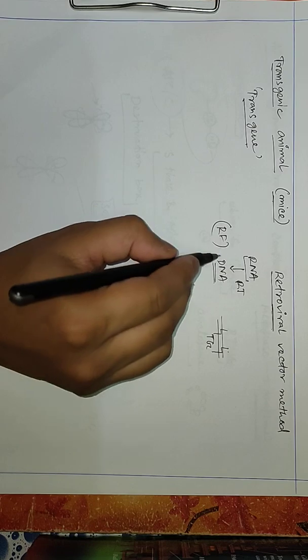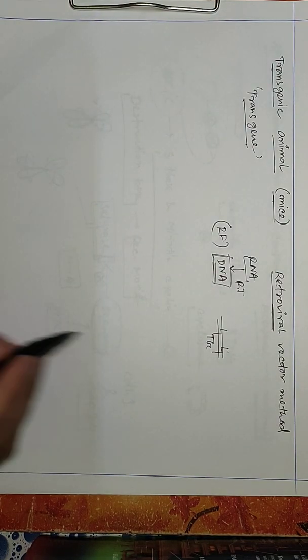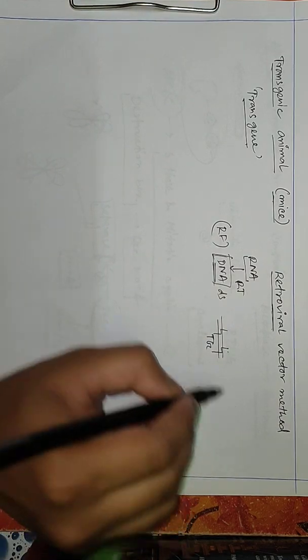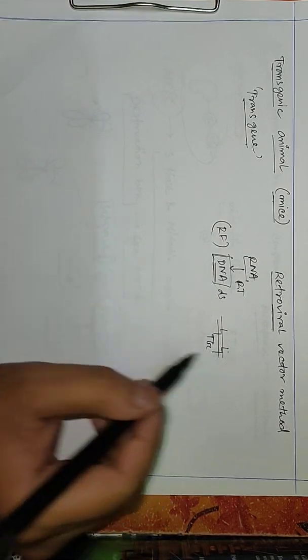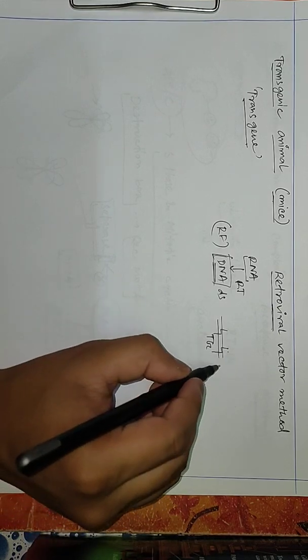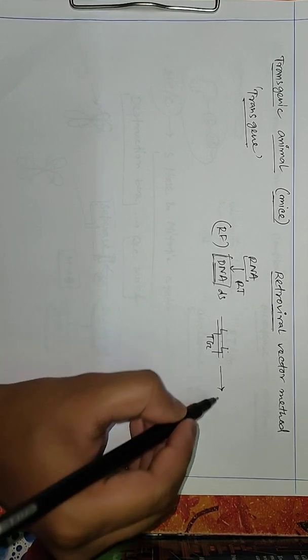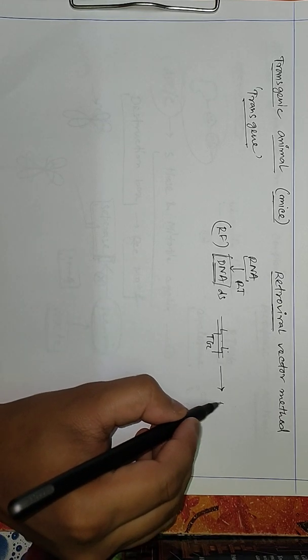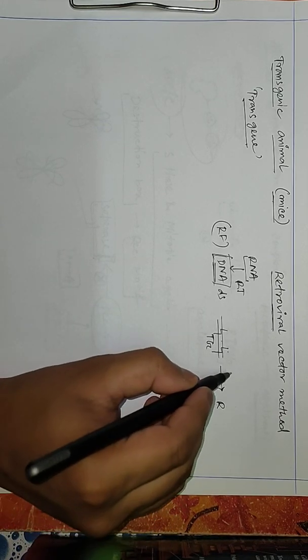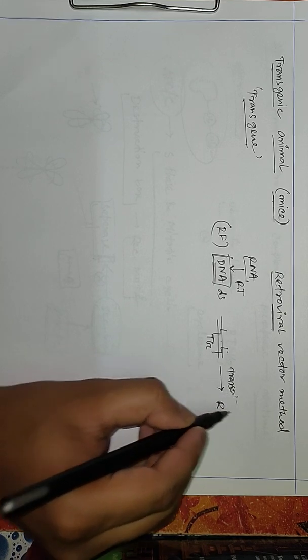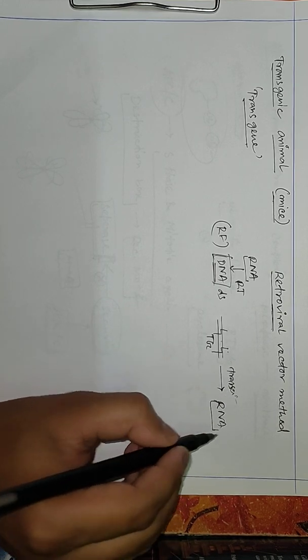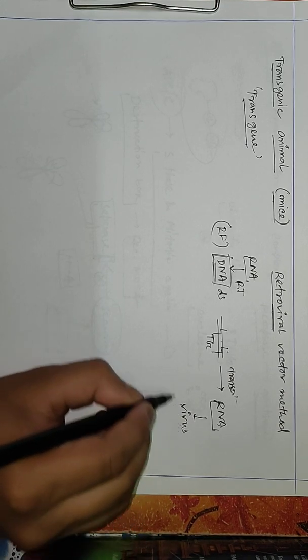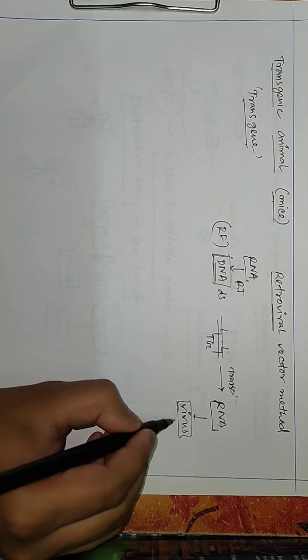Replicative form means the DNA in that case, which is double-stranded. We will introduce that transgene first into the DNA, then in the next generation the complementary DNA strand will go through transcription, becoming RNA, and again becoming a virus.